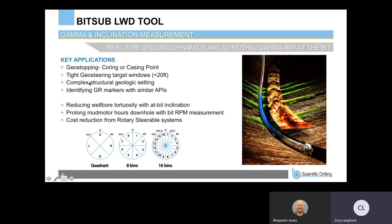For drilling applications, we can reduce wellbore tortuosity with our at-bit inclination. While we're rotating and sliding, we're getting this measurement in real time. I have a good example later where we were able to see that the wellbore was building up in inclination — we saw it in real time and were able to put in a slide before it started building too much and getting out of zone. It's just a very proactive approach using the inclination measurement.